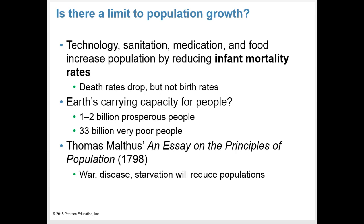British economist Thomas Malthus, who lived from 1766 to 1834, argued in his influential work 'An Essay on the Principle of Population' in 1798 that if society did not reduce its birth rate, then rising death rates would reduce the population through war, disease, and starvation. Although his thoughts were reasonable at the time, agricultural and medical improvements have helped humans increase the carrying capacity for people on Earth.